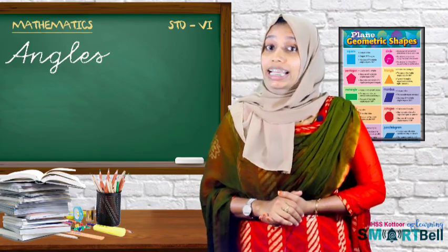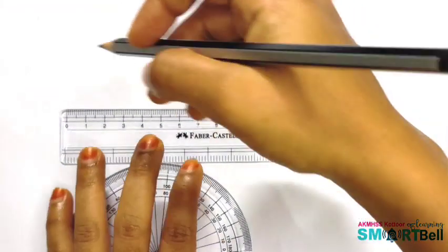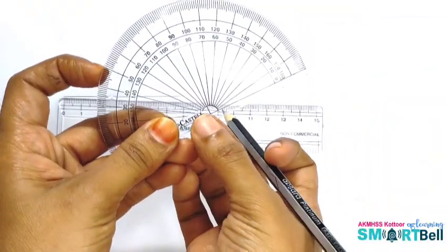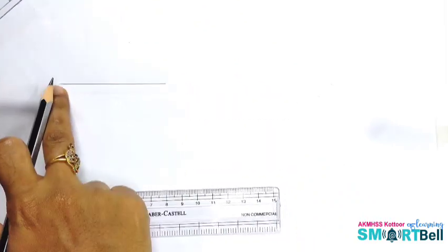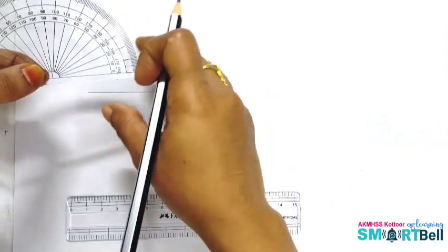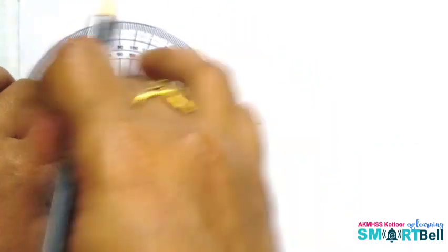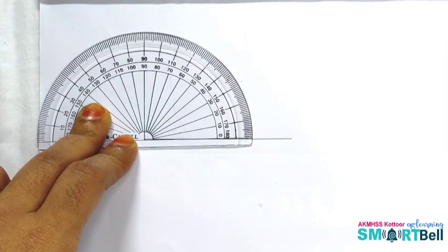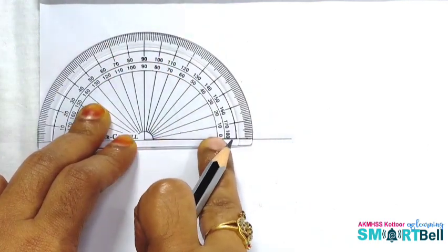Now we are going to draw a 60 degree angle. First step, make a line with a scale. After that, place the center point of the protractor on the endpoint at which the angle is formed. Keep the base of the protractor along with the side. Now look at the protractor. We are drawing a right side angle, so we choose the bottom number. Simply focus on zero.